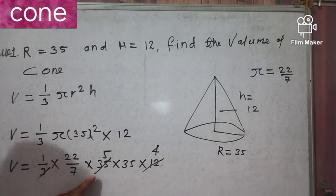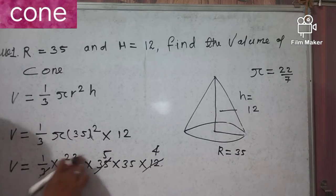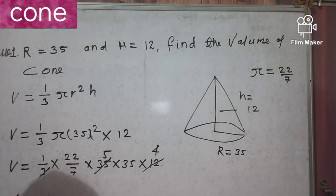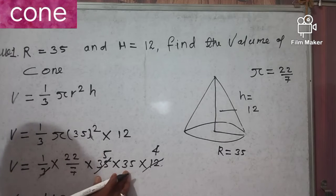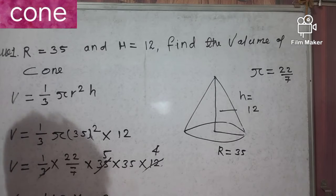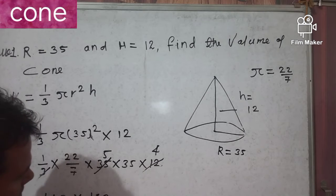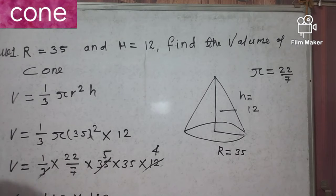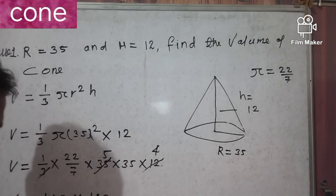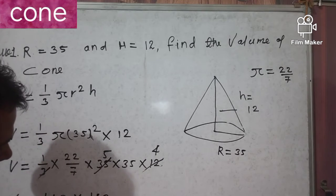So we have 22 times 5 times 35 times 4. Twenty-two times 5 is 110, and 110 times 35: we compute 35 times 4 is 140, and then 11 times 140 gives 1540, so 11 times 14 is 154 and we get 15400.